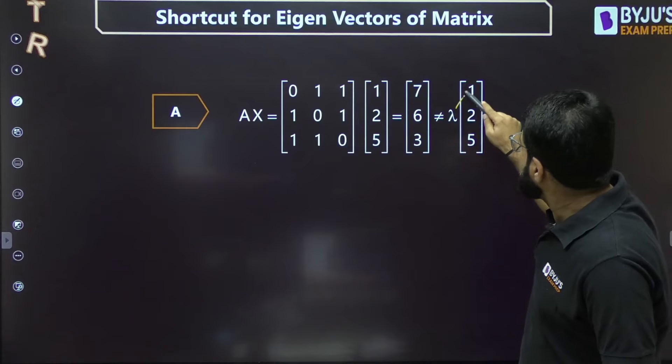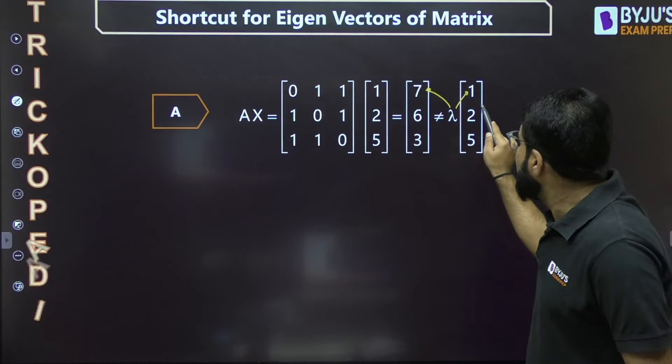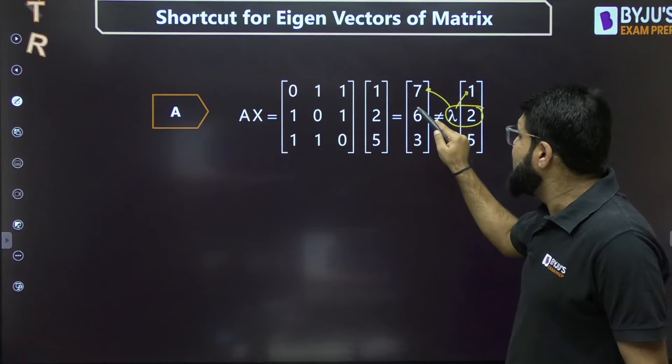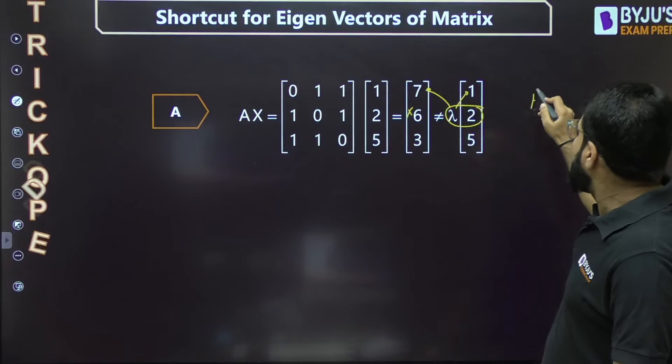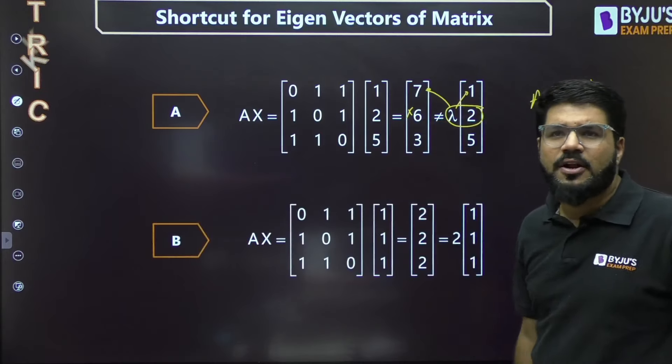If this was equal to λx, λ would be 7, but then 2λ would become 14, not equal to 6. So there's no common λ satisfying this. Option A doesn't satisfy Ax = λx - it cannot be the correct answer.